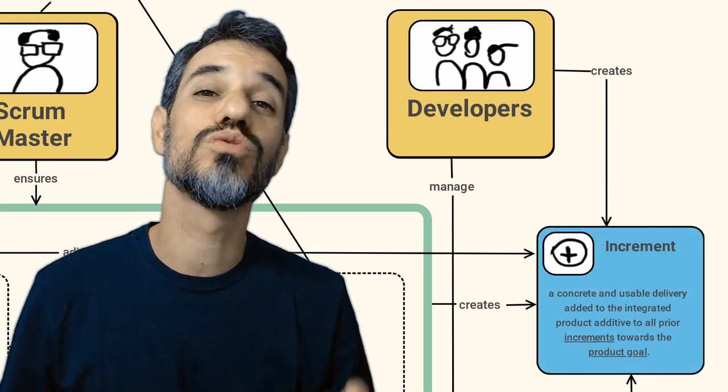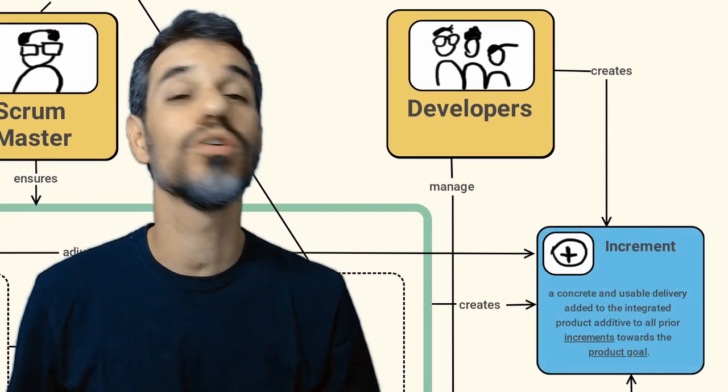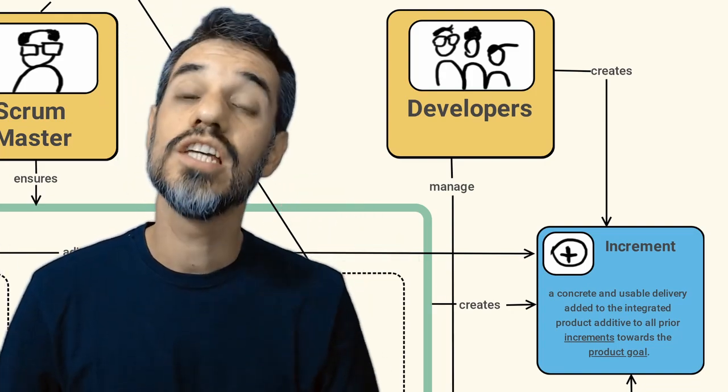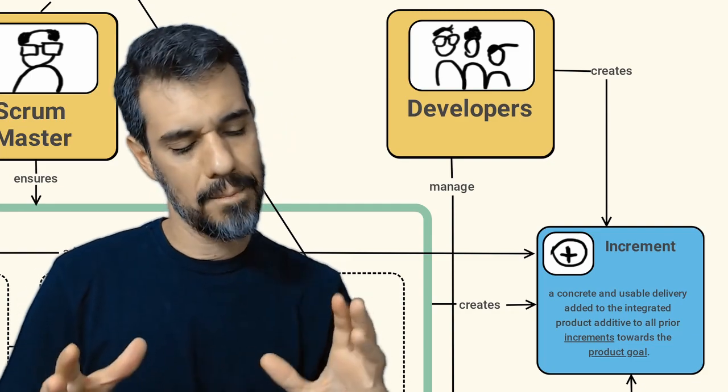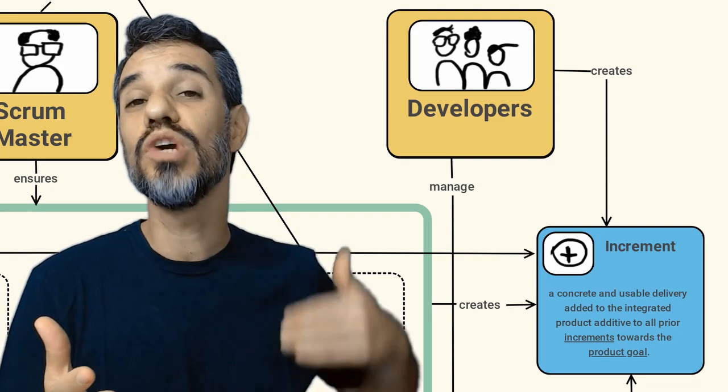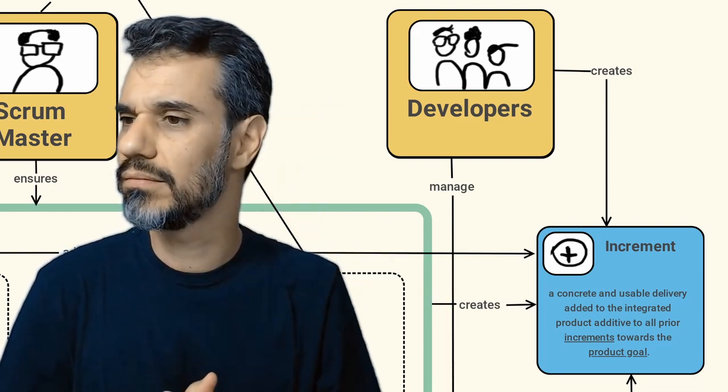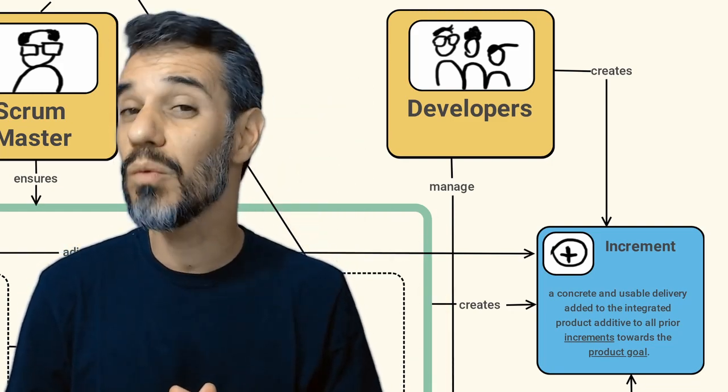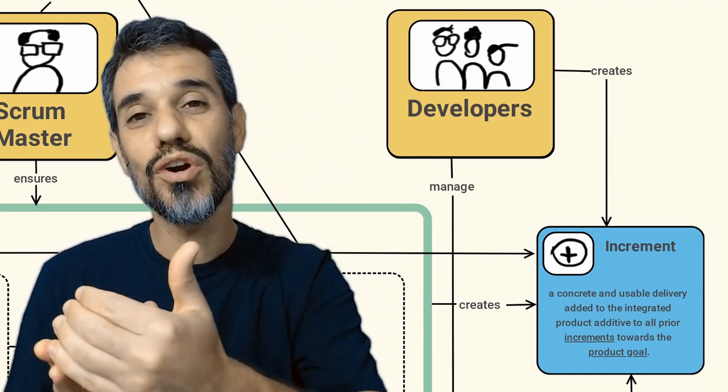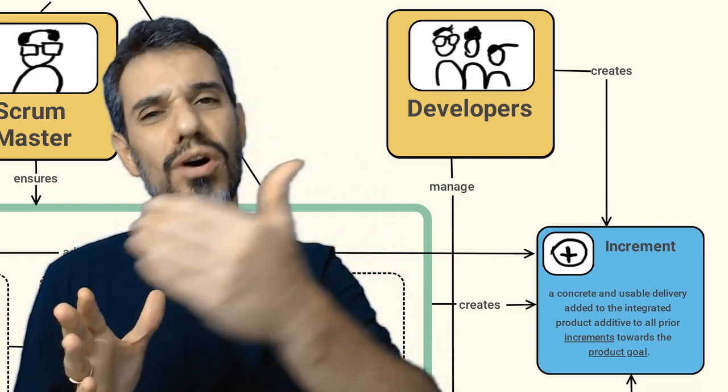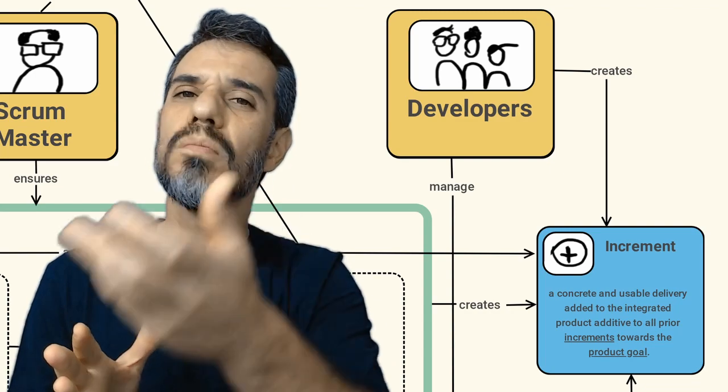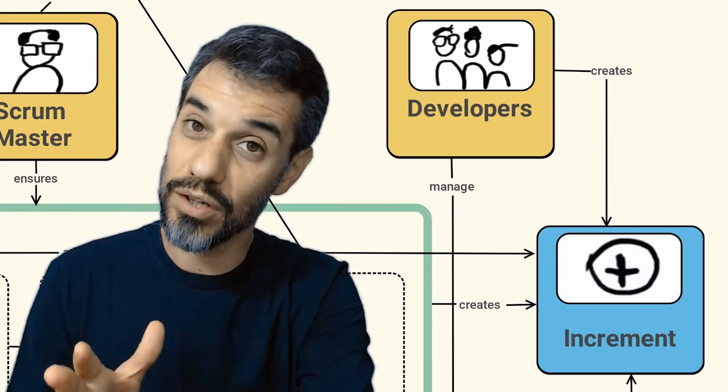And those developers are those responsible to create what we call the increment, the last artifact of Scrum. An increment is part of the product, a part that you are going to add to the working product in every sprint. Did I mention that the sprint starts whenever the last sprint ended? So for every sprint you are going to increment your product with some new capacities, with new usable functions of that product.